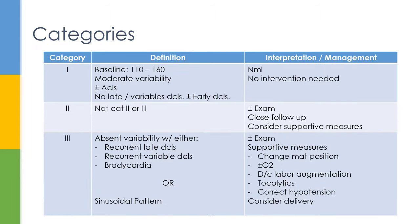After assessing all four components, you assign a category. Category 1 is essentially an A or A+ tracing — everything is normal. The baseline is 110–160, variability is moderate (6–25 bpm), accelerations may or may not be present (they're reassuring but not required), no late or variable decelerations, and early decelerations may be present. A Category 1 tracing is normal — no intervention needed.